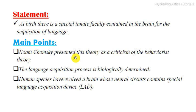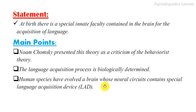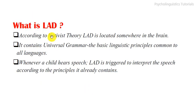The main points of the theory: Noam Chomsky presented this theory as a criticism of the behaviorist theory of language acquisition. The language acquisition process is biologically determined. According to the nativist theory, human species have evolved a brain whose neural circuits contain a special Language Acquisition Device, or LAD. So what is LAD according to nativist theory?